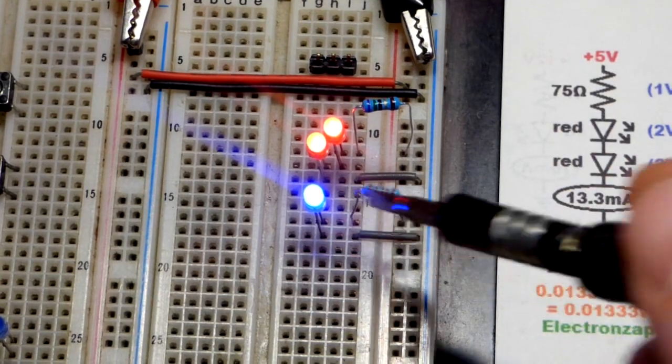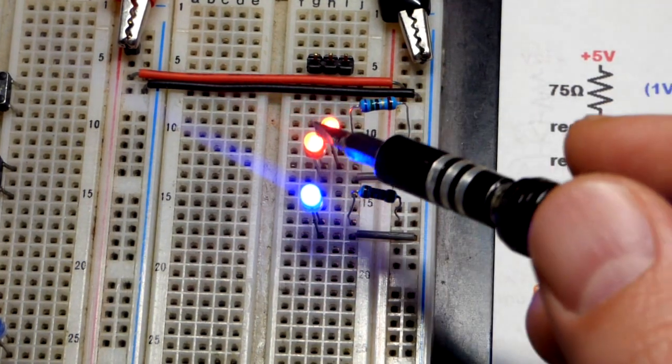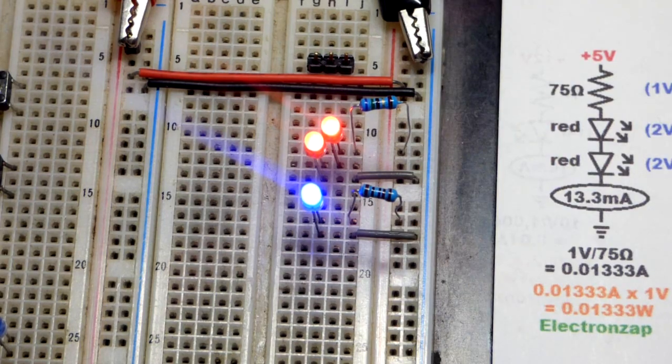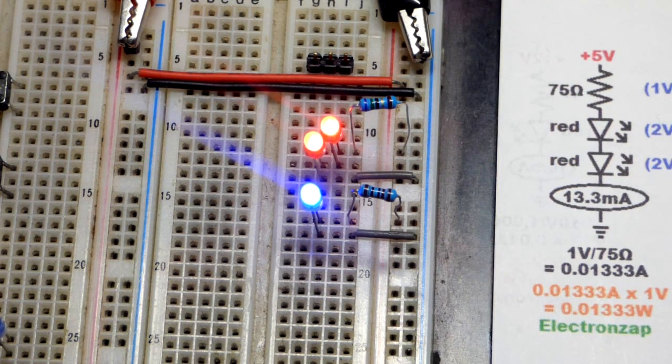But that's a 1000 ohm resistor right there for the blue LED. You can see these two series red LEDs with 75 ohms at 5 volts are about as bright.